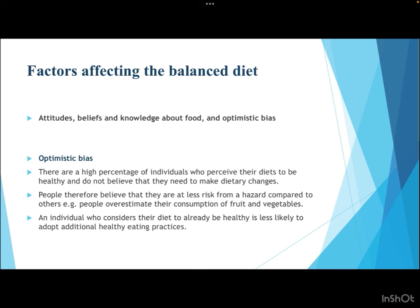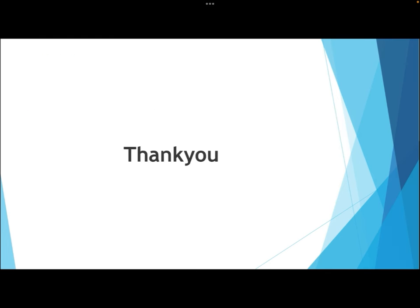Finally, optimistic bias is also a factor: a high percentage of individuals perceive their diets to be healthy and do not believe they need to make dietary changes. People believe they are at less risk from diet-related hazards compared to others, and sometimes overestimate their consumption of fruits and vegetables. An individual who considers their diet already healthy is less likely to adopt a healthier lifestyle compared to one who acknowledges their diet is poor and contributing to health issues.